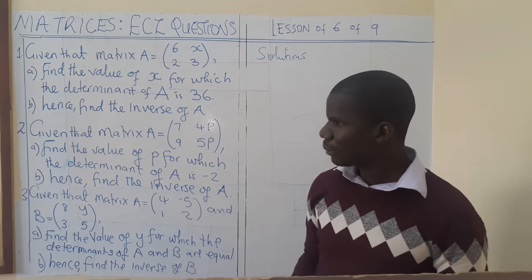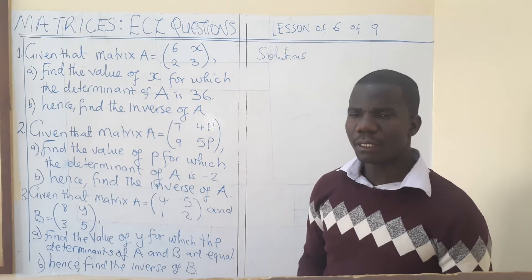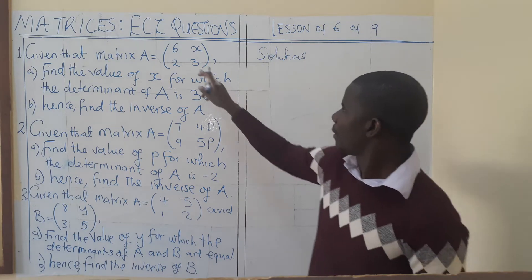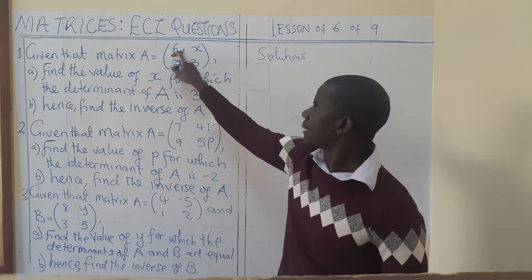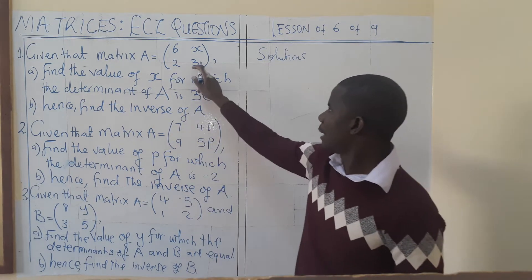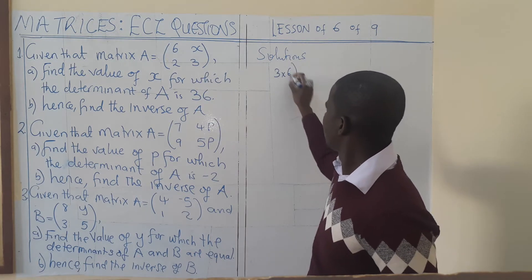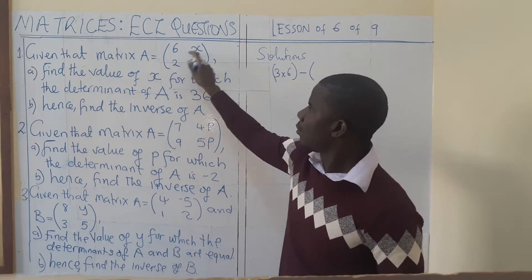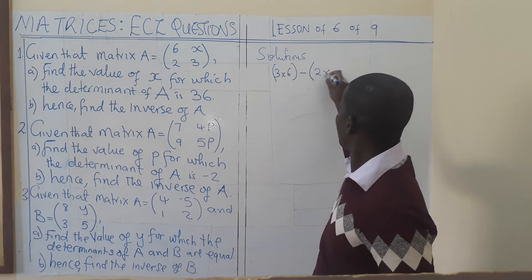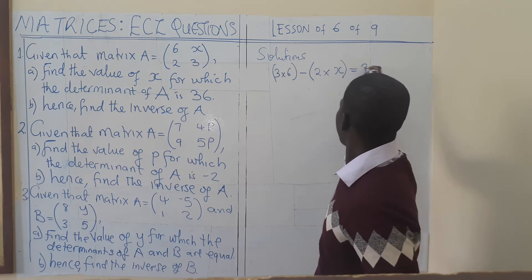The first thing we're supposed to do is find the determinant. How do we find the determinant? We find the product of the elements in the major diagonal — you multiply 3 by 6 — minus the product of the elements in the minor diagonal, which is 2 multiplied by X. This must give us 36.